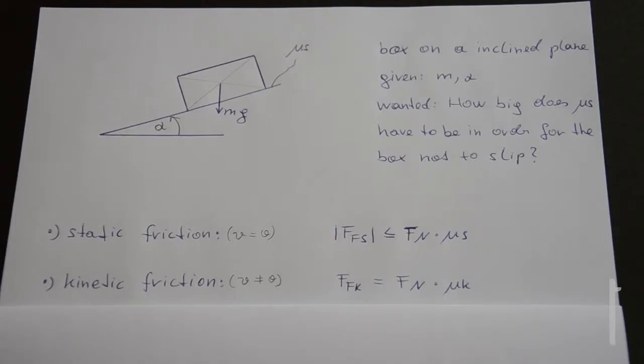Now what is asked in this problem is the μs where the box is still at equilibrium. So we're talking about static friction, since the box must not move. And now if we look at the equation for static friction, we see that we only need to calculate F friction static and the normal force, because then we can simply solve this inequality for μs.